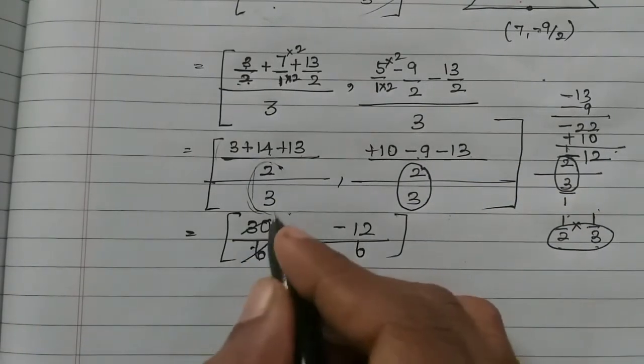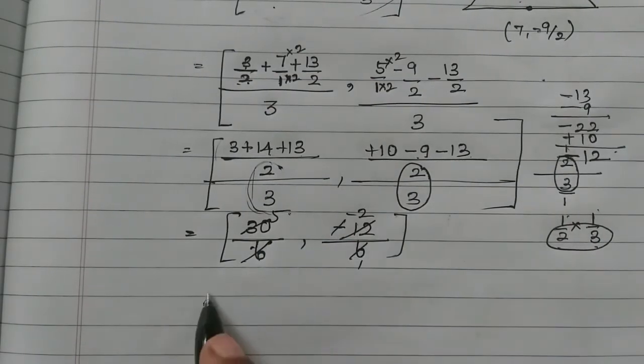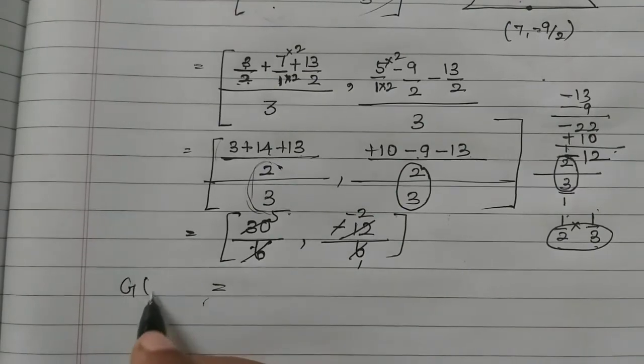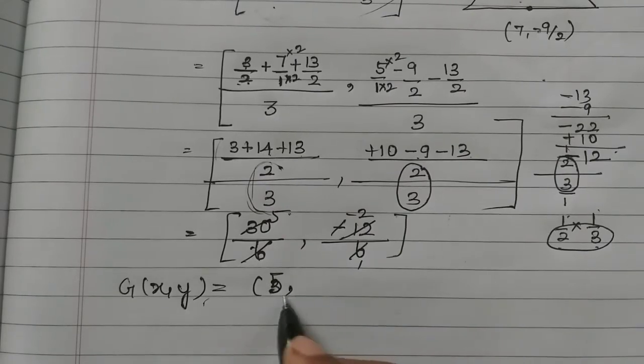So minus 12 divided by 3 into 2 is 6. Okay, 6 times 5 is 30. Then here is 6 times 1 is 6, then 6 times 2 is 12. The minus is cancelled. So which is 5, minus 2.